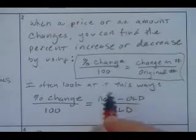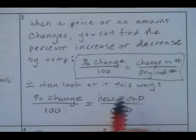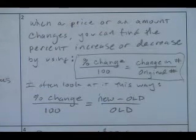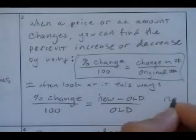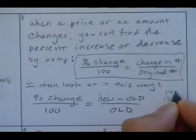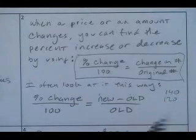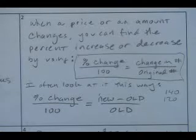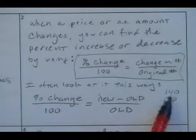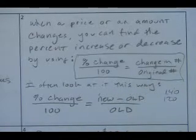When I do new minus old, that gives me how much it changed — the new price minus the old price. So change is always how much it differs. If something initially cost $120 and now it costs $140, then 140 minus 120 means it changed by 20 — it went up 20. New minus old gives me my change in number.